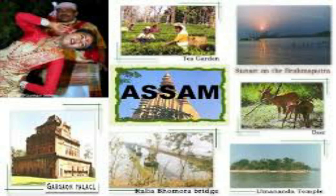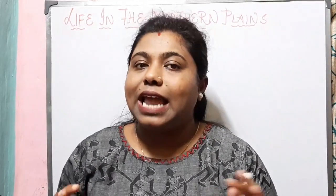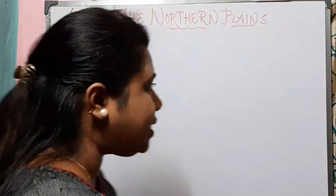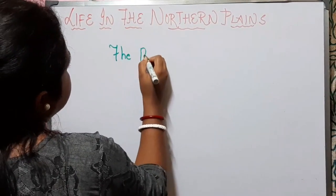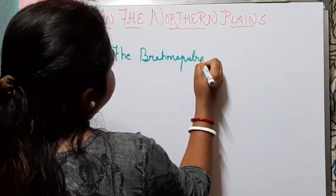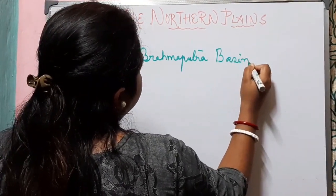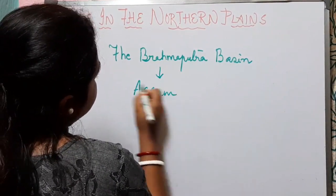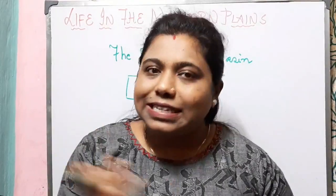Hello everyone, welcome back to my geography class. Today we will know about the state of Assam from the chapter 'The Northern Plains' for class 4. In earlier videos we discussed about states in the Sutlej basin and the Ganga basin. Now we will know about the state that lies in the Brahmaputra basin, which is Assam.